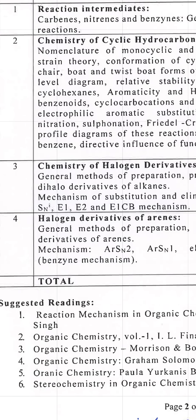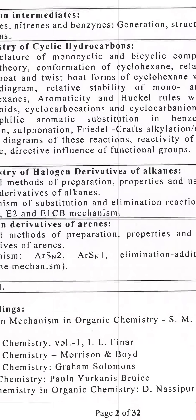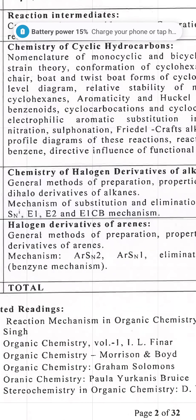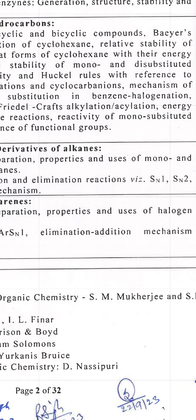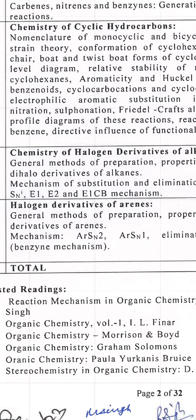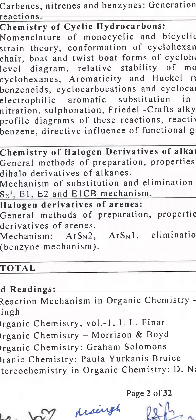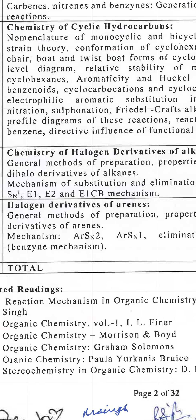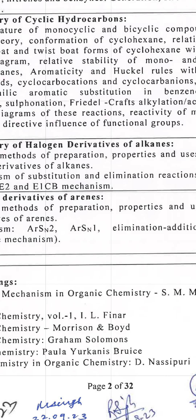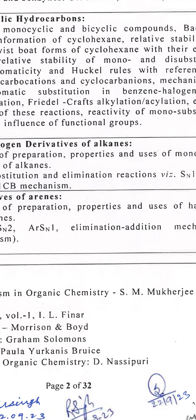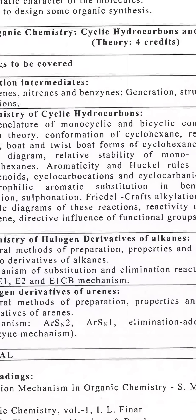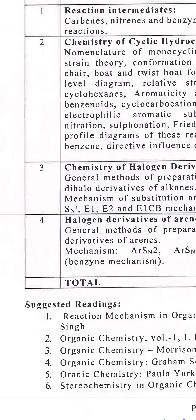Chapter 4 is halogen derivatives of arenes — general method of preparation, properties, and uses of halogen derivatives of arenes. Arenes are related to benzene and its compounds. Examples include chlorobenzene, iodobenzene, fluorobenzene, 1,2-dichlorobenzene, 1,3-dichlorobenzene, 1,4-dichlorobenzene, and 1,2,3-trichlorobenzene. Mechanisms to study: aromatic SN2, aromatic SN1, and elimination-addition — the benzyne mechanism — where elimination occurs first then addition, both in the same reaction.